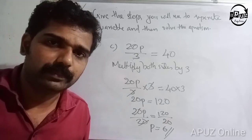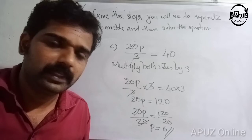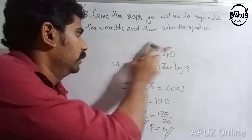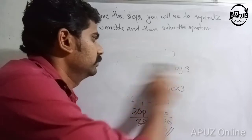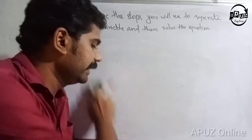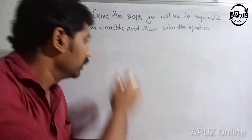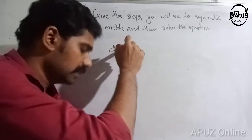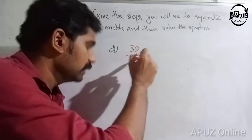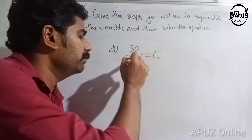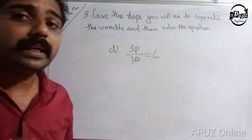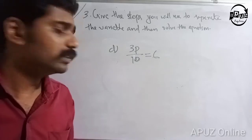Answer. Next question, question C. Next question D. Question D: 3p divided by 10 is equal to 6.